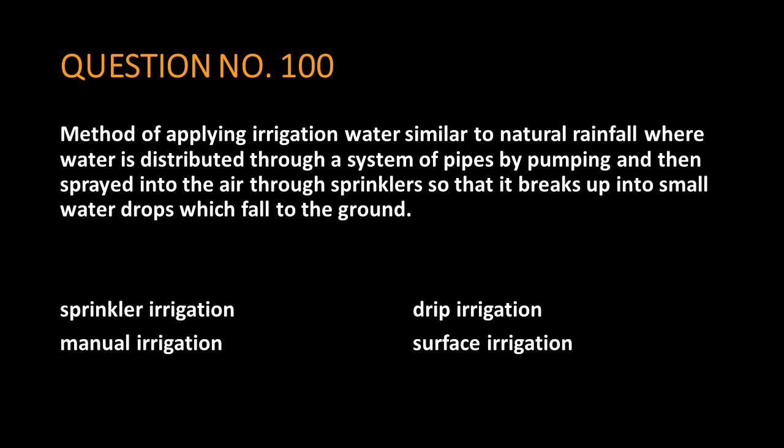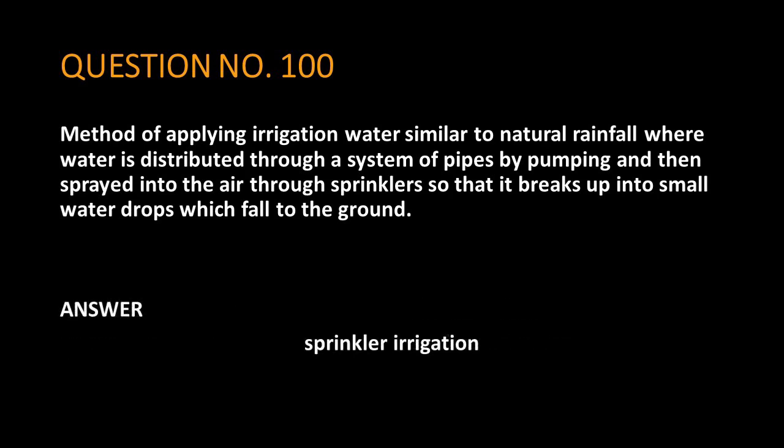Question No. 100. Method of applying irrigation water similar to natural rainfall where water is distributed through a system of pipes by pumping and then sprayed into the air through sprinklers so that it breaks up into small water drops which fall to the ground. The answer is sprinkler irrigation.